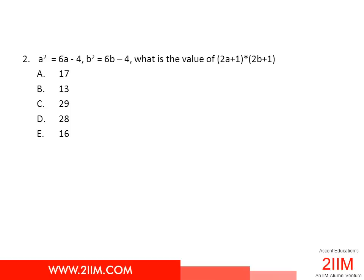Let's read the question first. a² = 6a - 4, b² = 6b - 4. We need to find the value of (2a + 1)(2b + 1). This is a classic question, one of my favorites in quadratic equations.